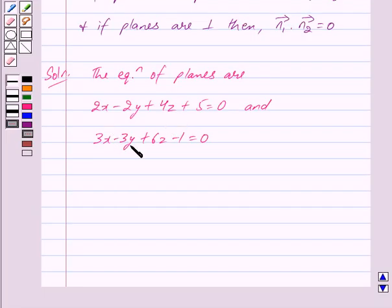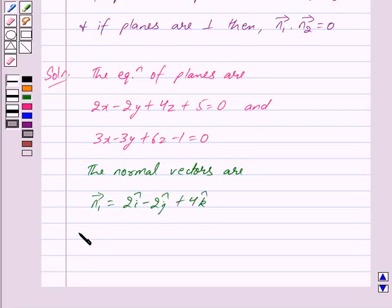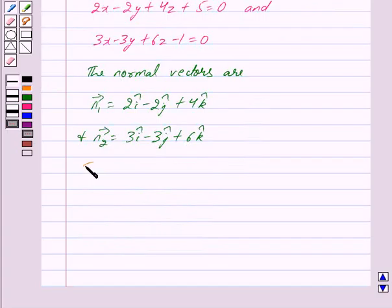From the equation of the planes we get the normal vectors as vector n1 equals 2i cap minus 2j cap plus 4k cap and vector n2 equals 3i cap minus 3j cap plus 6k cap. Now the direction ratios of vector n1 are